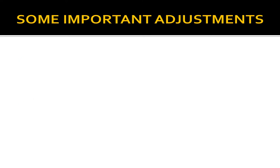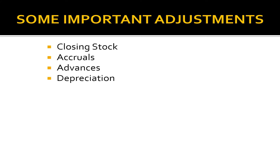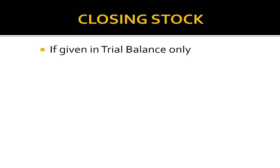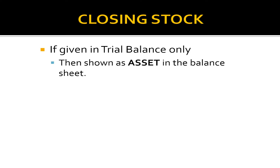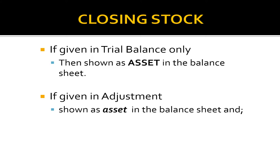Some important adjustments are: closing stock, accruals, advances, depreciation, bad debts, and provisions. Let's talk about closing stock first. If closing stock is given in the trial balance only, it will be shown as an asset in the balance sheet. And if it is given in adjustment, it will be shown as an asset in the balance sheet and on the credit side of the trading account.